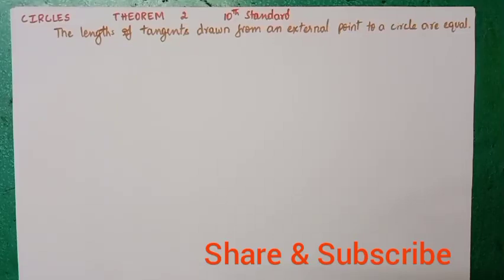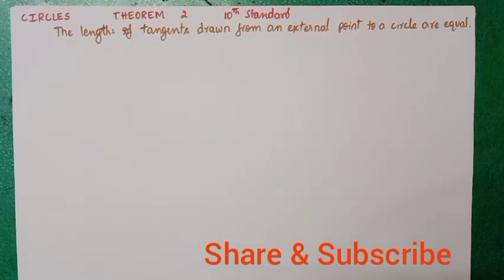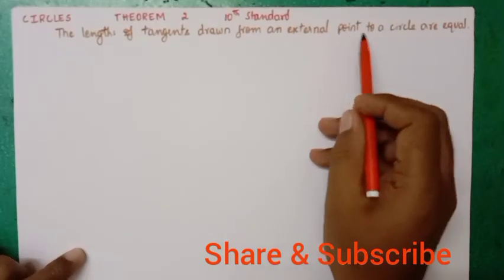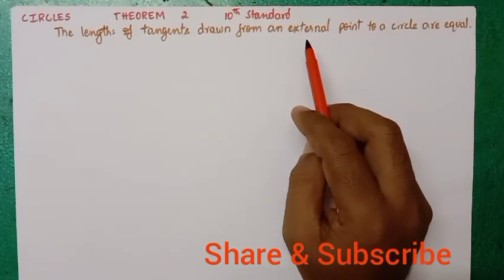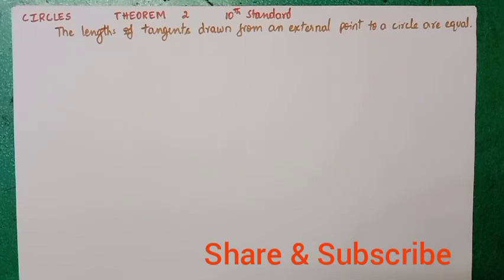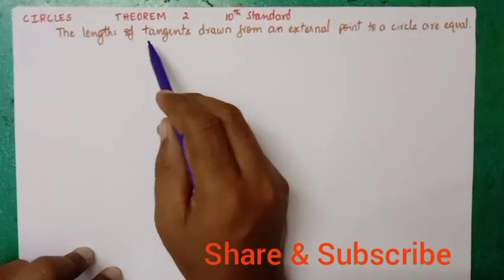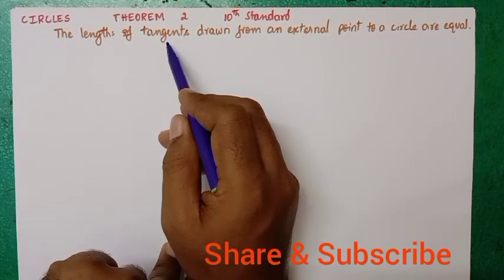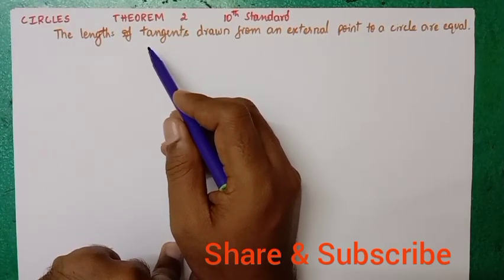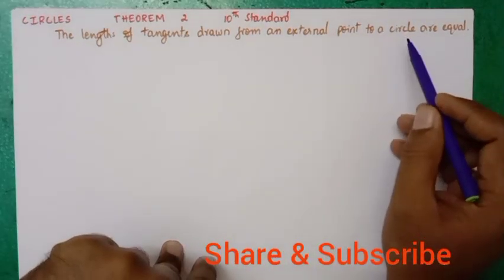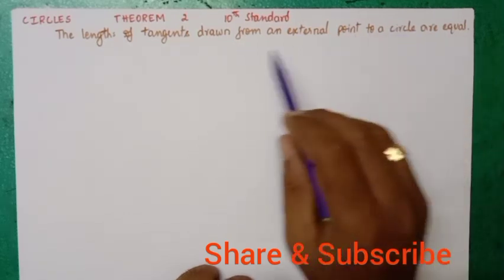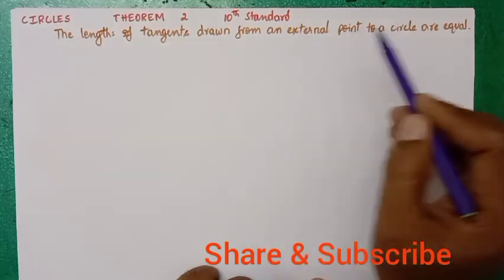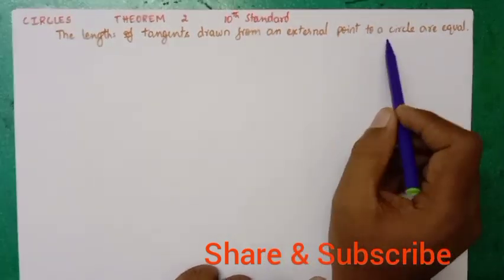Circles Chapter Theorem 2, 10th Standard. The length of tangents drawn from an external point to a circle are equal. This is the statement we have to prove. A tangent is a line which touches the circle at a single point, and that tangent will be perpendicular to the radius of the circle.